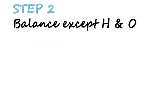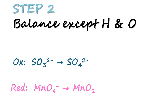Moving on to step 2 — we need to balance all elements except for hydrogen and oxygen. For our half equations, S and Mn are already balanced, so we can proceed to the next step.